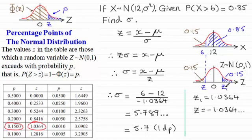And if we then reflect it back on the other side of the 0 it's clearly going to be negative 1.0364. So by using the tables then we can just carry on as we did down here ending up with the standard deviation as being 5.7.